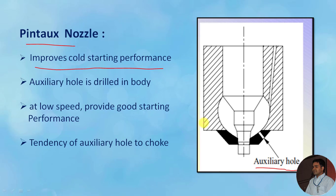This auxiliary hole is drilled in the body. At low speed, with the help of this auxiliary hole, it provides good performance, which we'll see in the next slide. The only drawback is the tendency of the auxiliary hole to choke. The auxiliary hole diameter is quite small, and if it gets choked, it will create problems in nozzle performance.